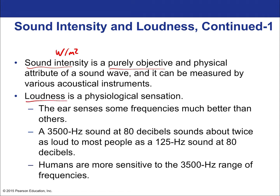The ear senses some frequencies better than others. The decibel scale works best at maybe a frequency of about 1,000 hertz, which is a really typical frequency in everyday life. Our ears don't work as well at the higher and lower frequencies. A 3,500 hertz sound at 80 decibels sounds about twice as loud to most people as a 125 hertz sound at 80 decibels. The unit for loudness is sometimes called the phon.